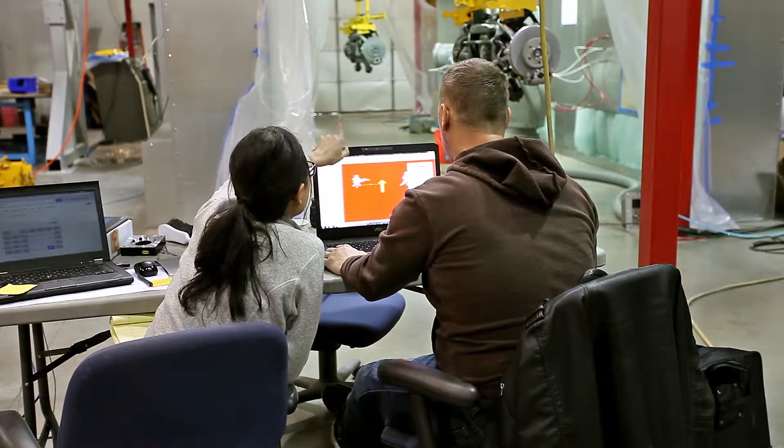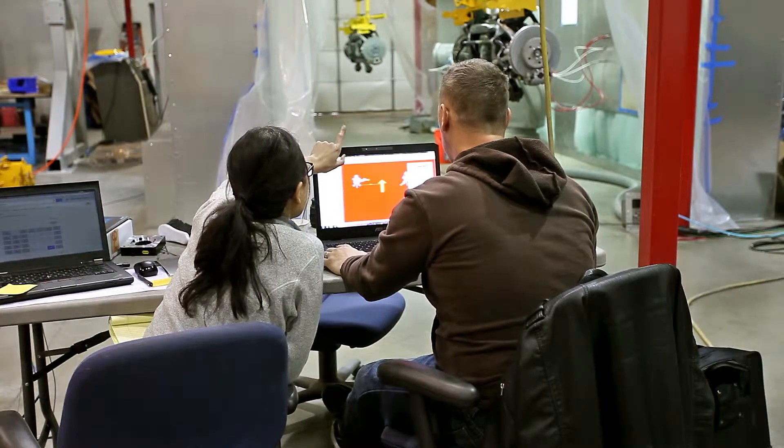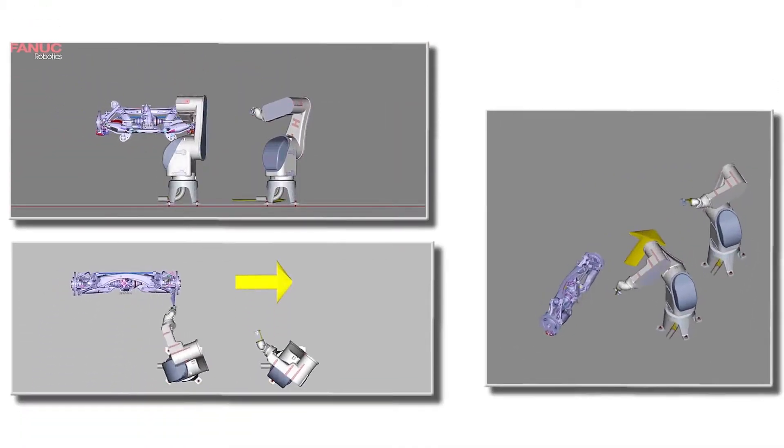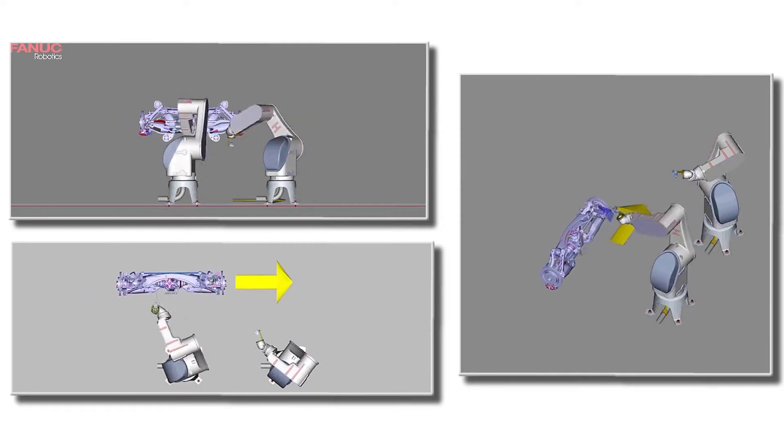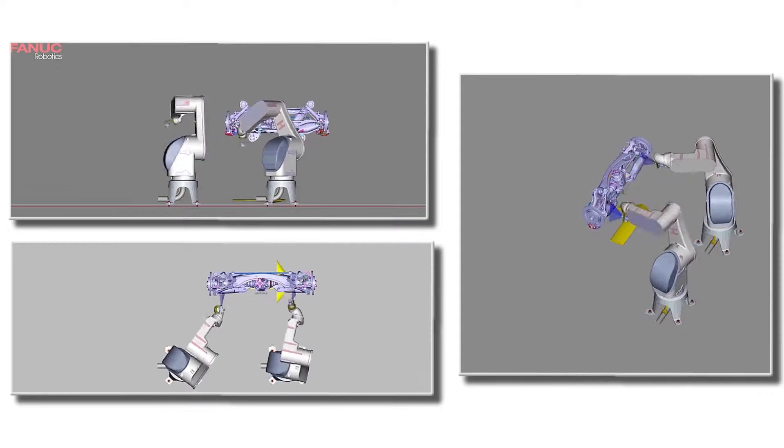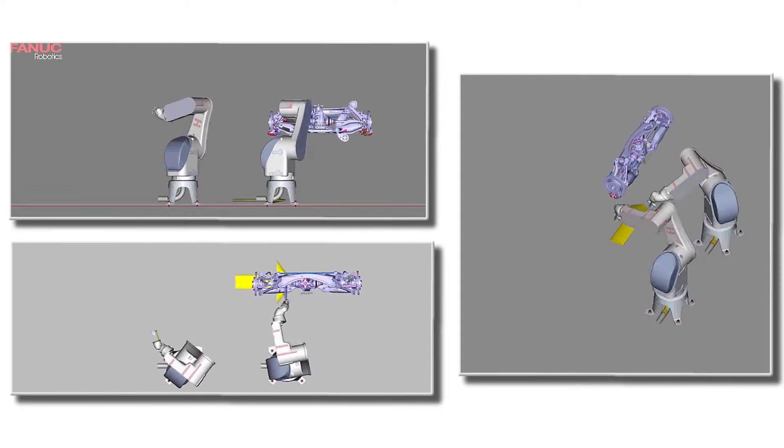For robotic programming, we started in a software called Paint Pro, which is released by FANUC. And we start by importing the CAD, the solid models of all of the parts. So the robots, the paint booth, and the actual rear axle sub-assemblies that we're painting.